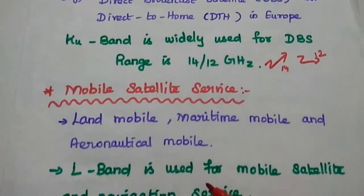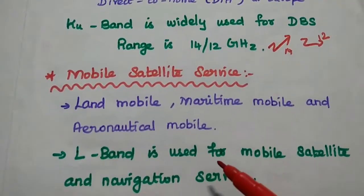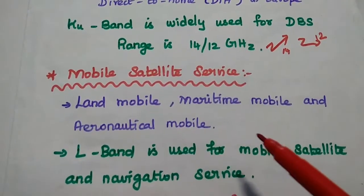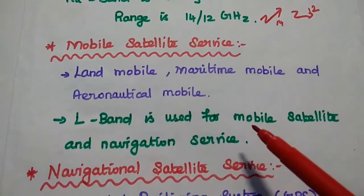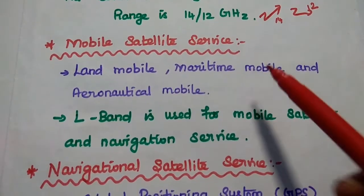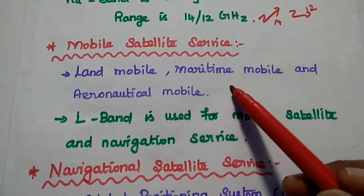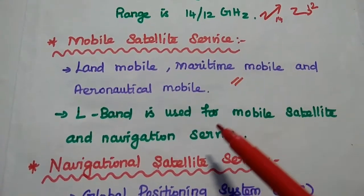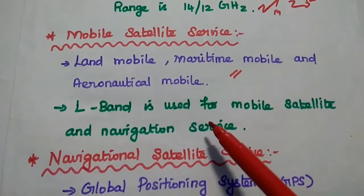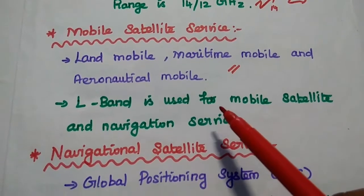The next one is Mobile Satellite Service. It is mainly used for land mobile, maritime mobile — that is, in ships — and aeronautical mobile.